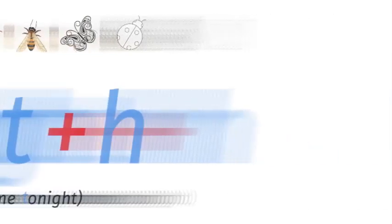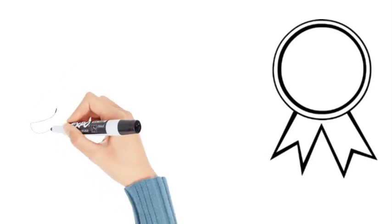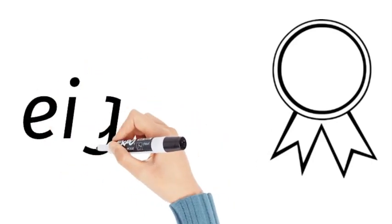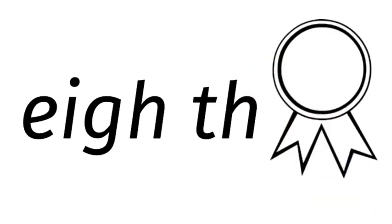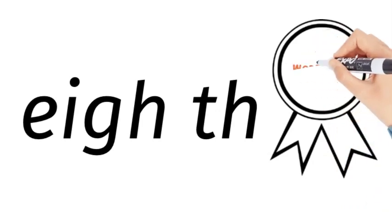Eight insects go home tonight, or a fatty and a skinny go home tonight. Now how do you spell eighth? E-I-G-H-T-H. So, a fatty and a skinny go home tonight, and then don't forget the 'H' at the end for 'th'. Okay, I hope that helps you.